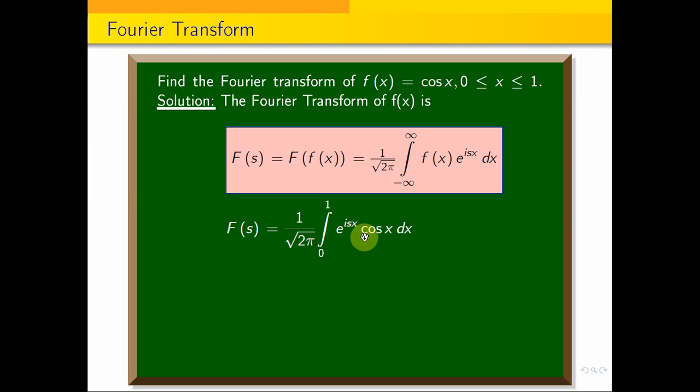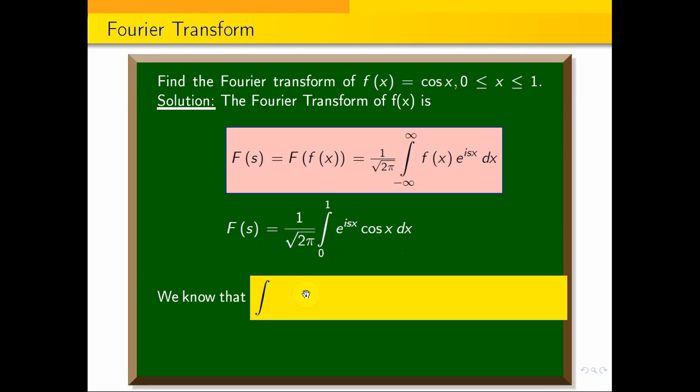We know that we have the formula for integral e^(ax) cos(bx) dx. It is e^(ax)/(a² + b²) times (a cos(bx) + b sin(bx)).